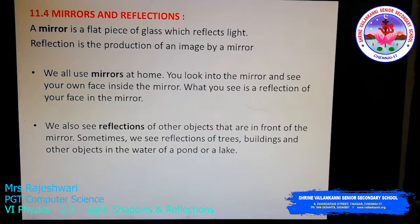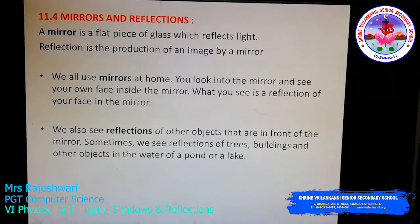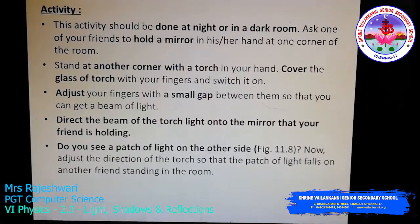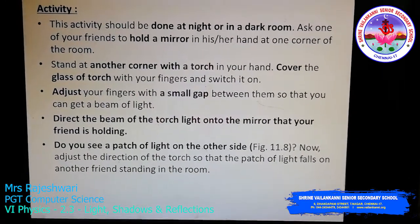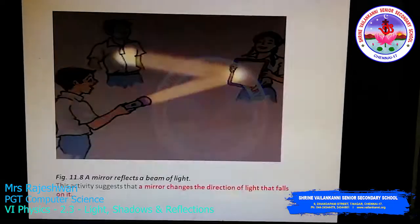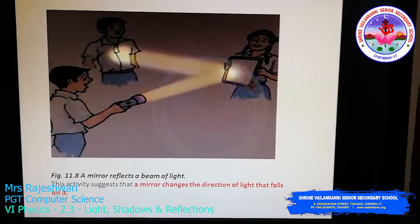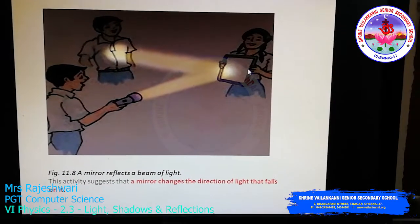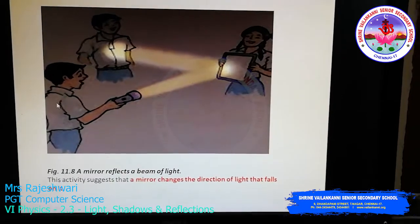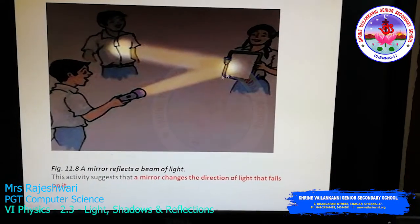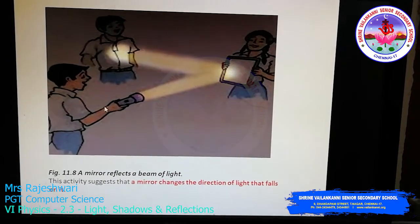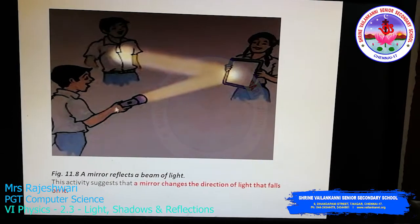Now let us look into two different activities so you can understand this concept more clearly. The first activity can be done only at night or in a dark room. Ask one friend to hold a mirror and stand in one corner of the room, and ask another friend to hold a torch and direct it straight at the mirror.